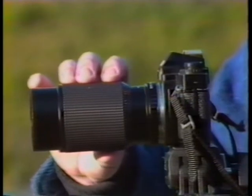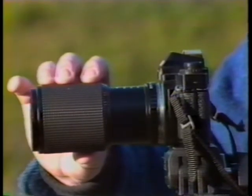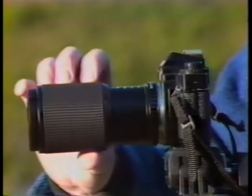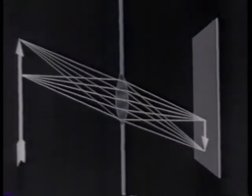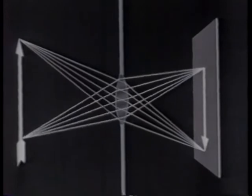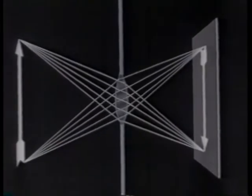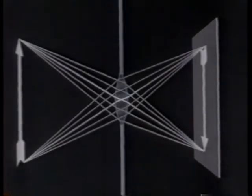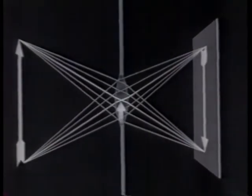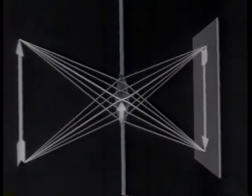The lens of a camera must do the same thing to focus an image on film. When you focus, you're making sure that the relationship between the object, the lens, and the film will produce a clear image.